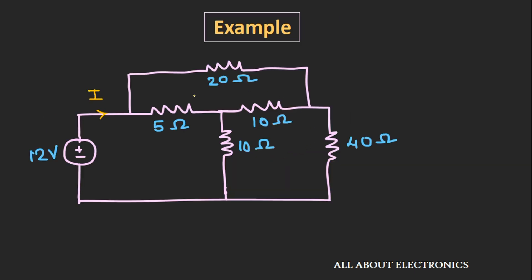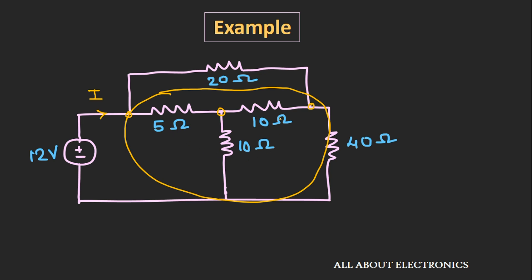Now let's look at one example based on the star-to-delta conversion. We are given a circuit and need to find the current I through the 12-volt voltage source. In this circuit the resistors are neither in series nor in parallel, so we cannot solve it by simple series and parallel combinations. We could apply KVL and KCL, but that would take more time. However, in this circuit there is a star connection — the 5-ohm and two 10-ohm resistors are connected in a star. If we transform this star network into the equivalent delta network, we can solve the problem using series and parallel combinations.